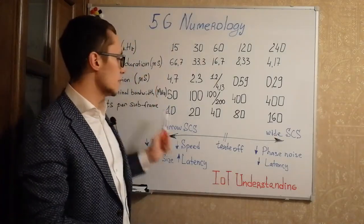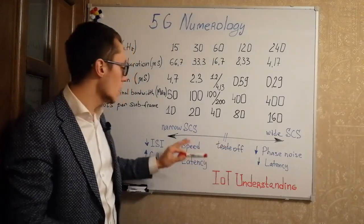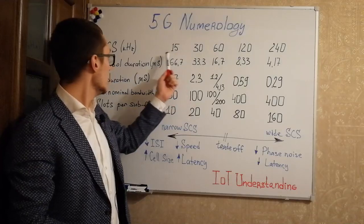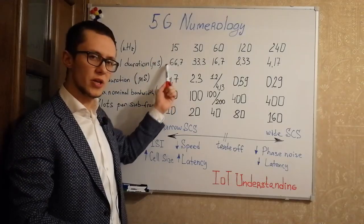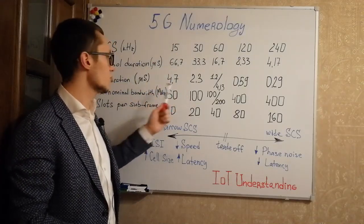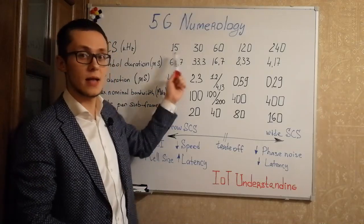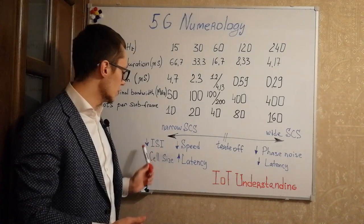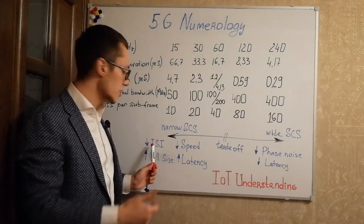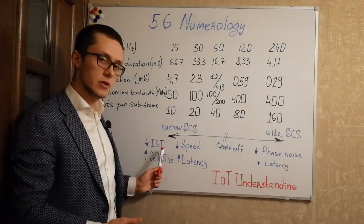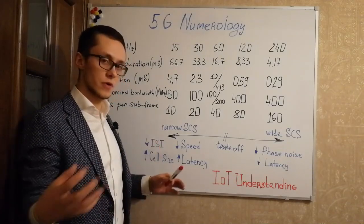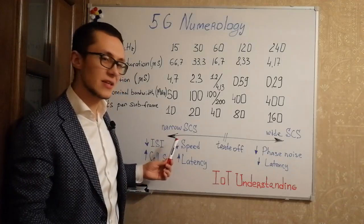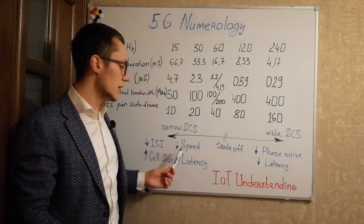As you can see from this table, with narrow subcarrier spacing we have a pretty large symbol duration and cyclic prefix duration, as in LTE. This helps us mitigate inter-symbol interference and as a result have long-distance cell size, but it affects speed and latency negatively.